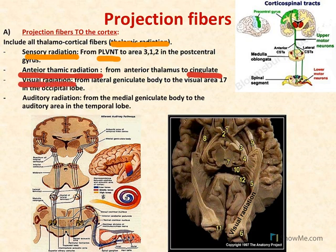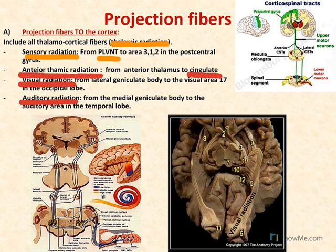The third is visual radiation, projecting from a nucleus in the most posterior part of the thalamus called the lateral geniculate body to the primary visual area 17 on the medial surface of the occipital lobe. These fibers are included in the visual pathway. The fourth is auditory radiation, radiating from the medial geniculate body and projecting to the temporal lobes, where we have the primary auditory area, included in the hearing pathway.